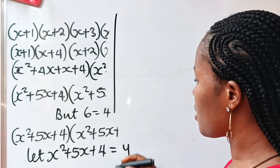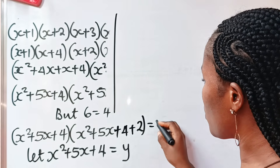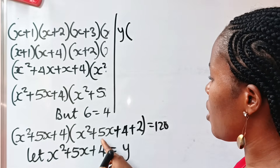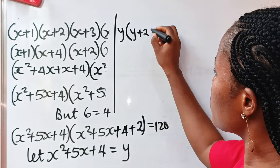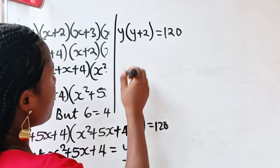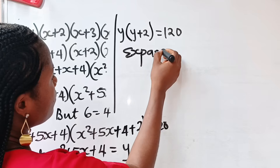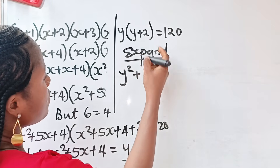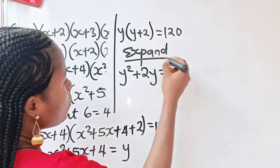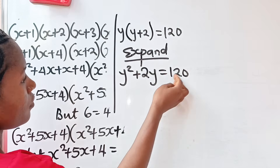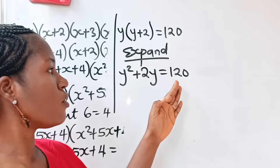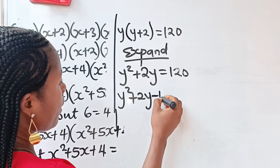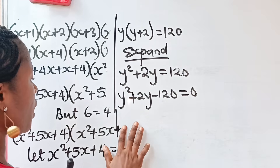So replacing with y, we have y times y plus two equals 120. Expanding: y squared plus two y equals 120. Bringing 120 to the left side gives us y squared plus two y minus 120 equals zero.